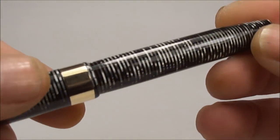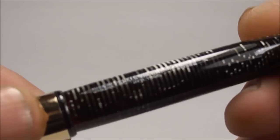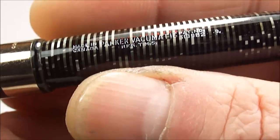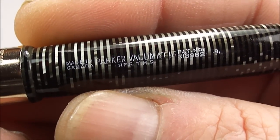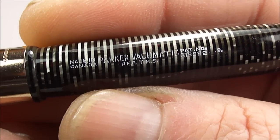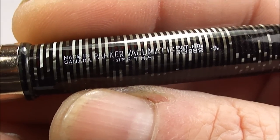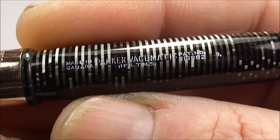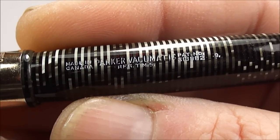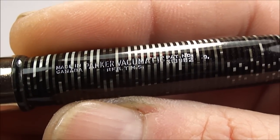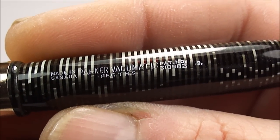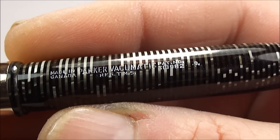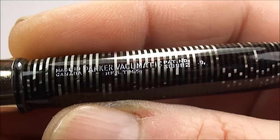Now let's show you the barrel imprint first of all. I've actually highlighted it for you, so you can see it nice and clear there. Now what the barrel imprint reads there for us from the left it actually tells us it's made in Canada. To the middle it has obviously the Parky Vacuumatic and then below it has Reg TMS. And then if you look to the right of the Vacuumatic there you'll see it has a pack number.